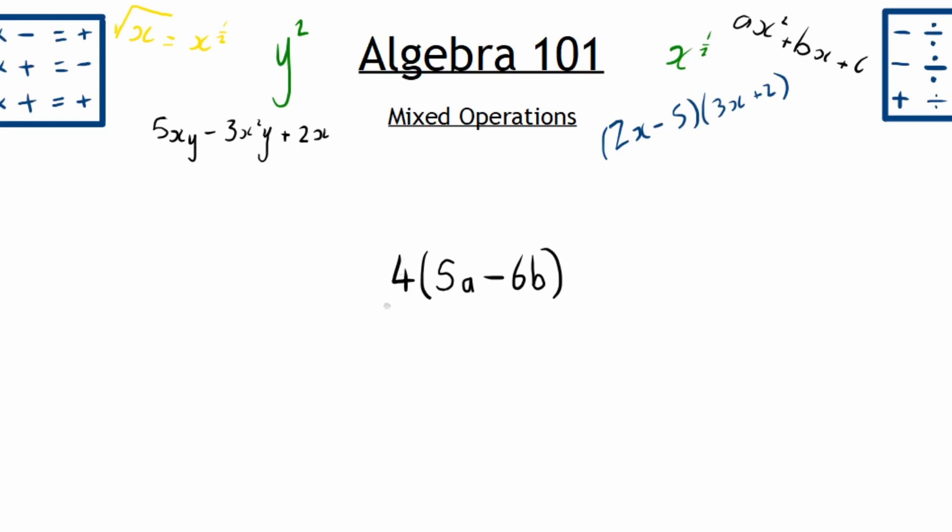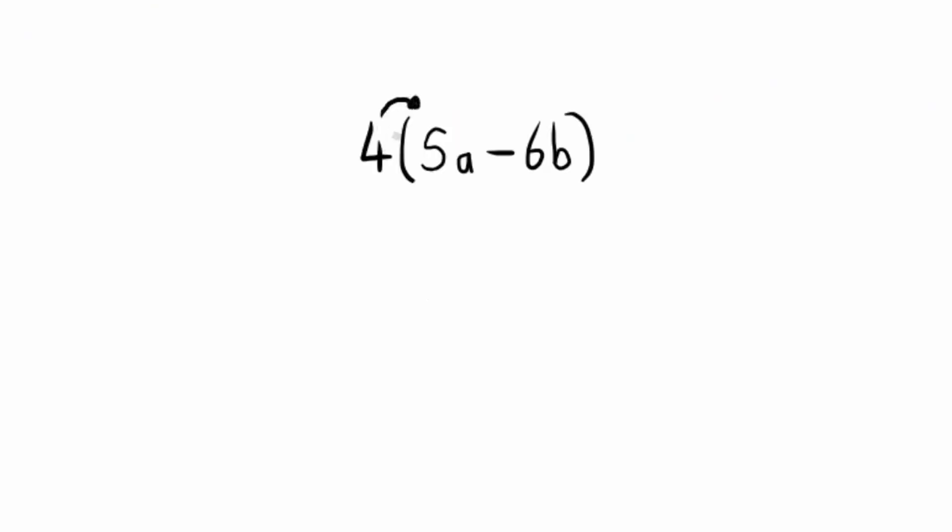Our age-old mathematics tells us that when I multiply a term such as 4, one term, with an entire bracket of 5a minus 6b, I need to multiply 4 with both the 5a and the negative 6b term.